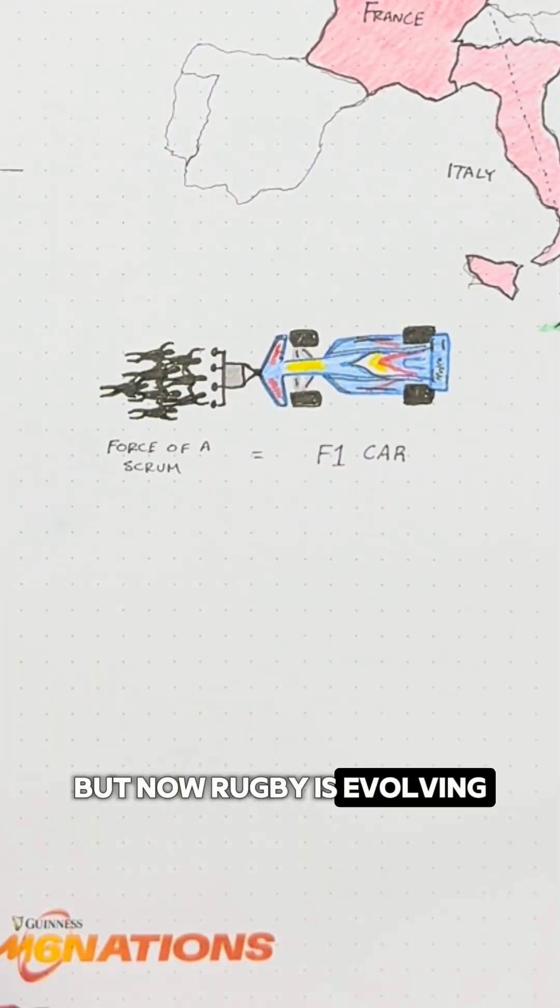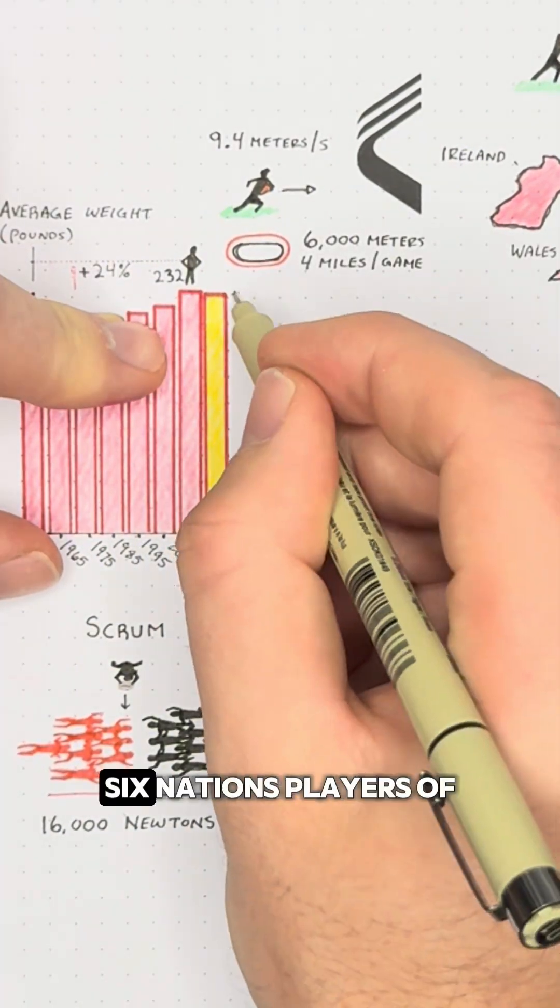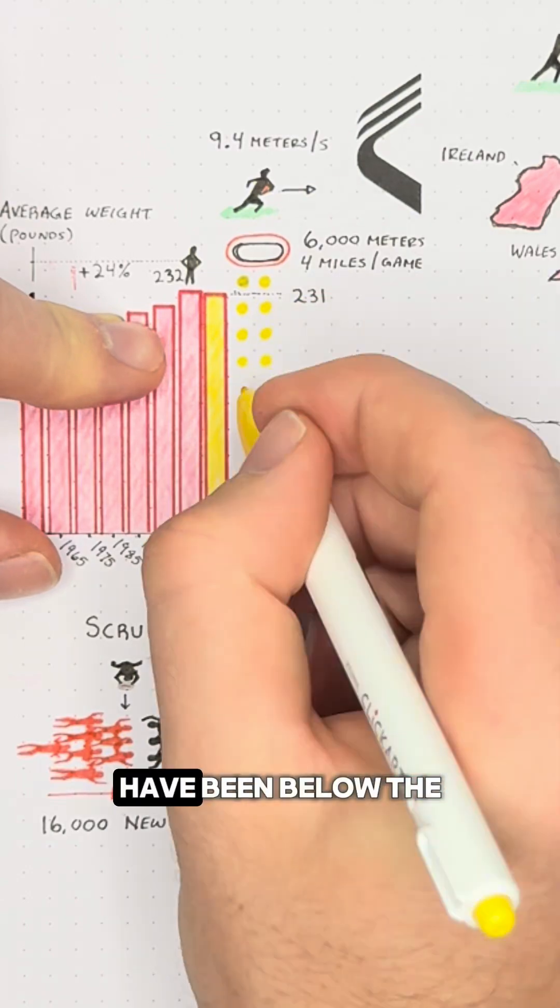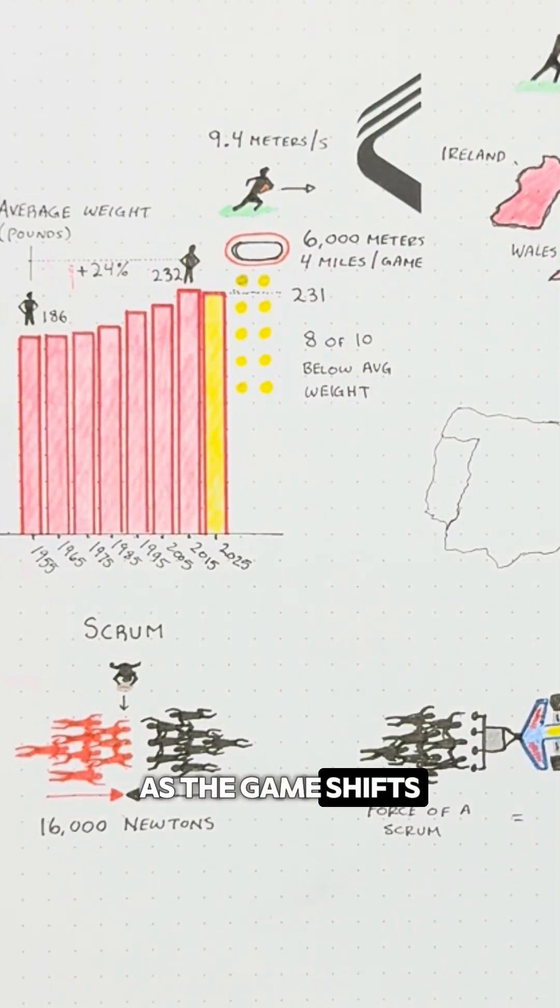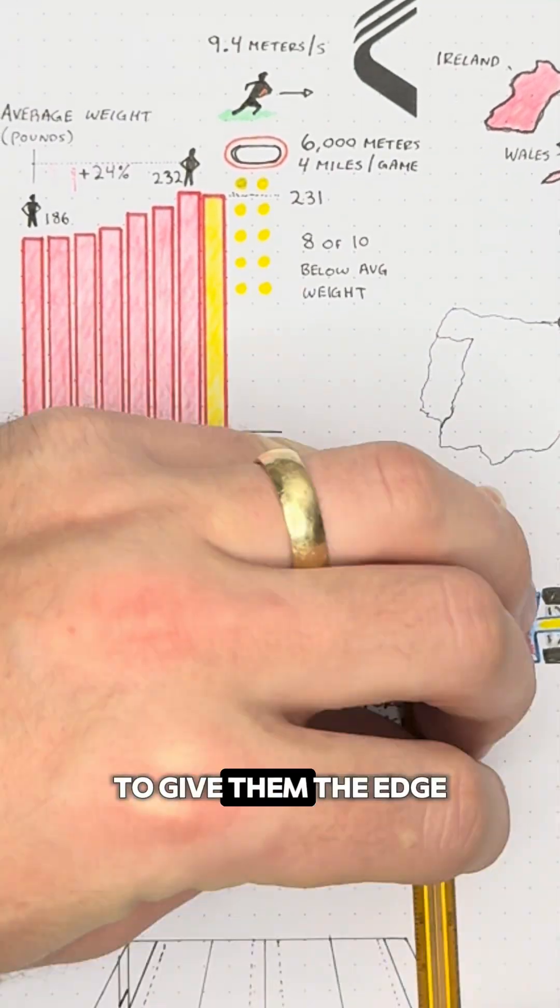But now rugby is evolving. Since 2015, the trend of ballooning player size has flatlined, and even eight of the last 10 Six Nations players of the tournament have been below the average size as the game shifts to be more cerebral, swapping the extra steak dinners for analytics to give them the edge.